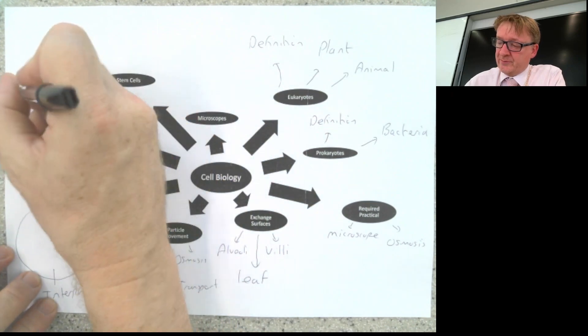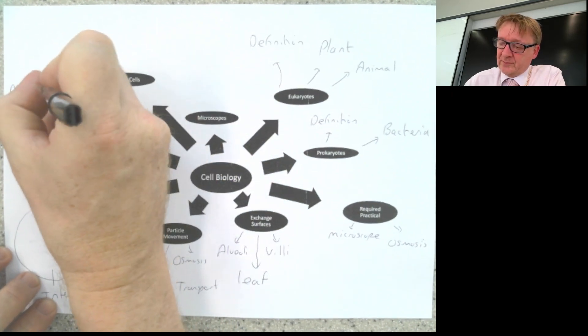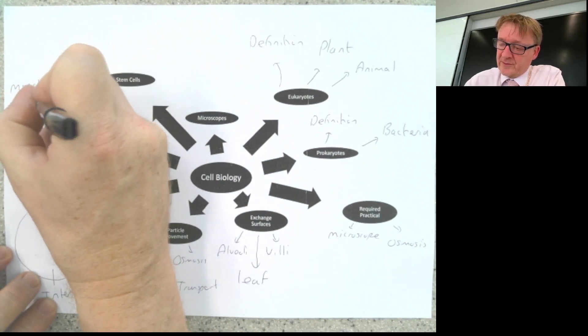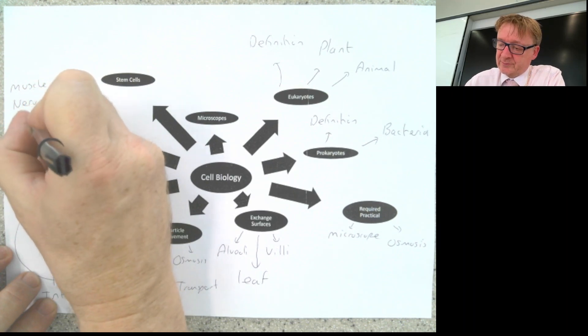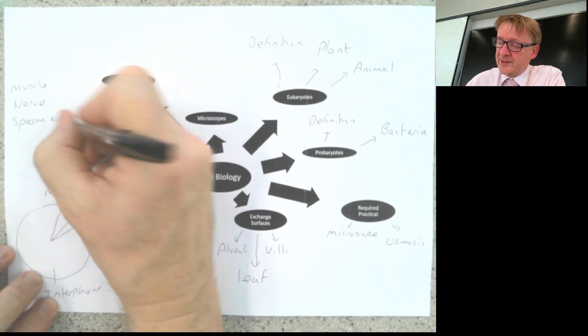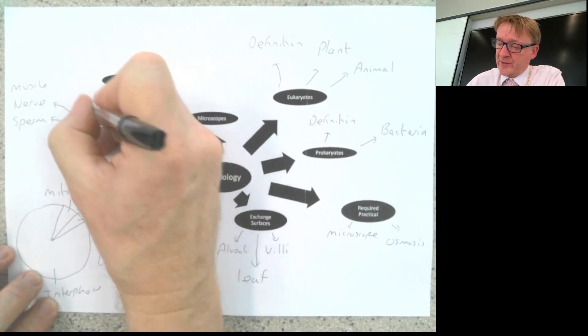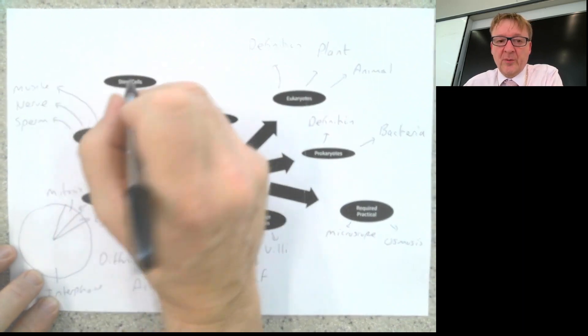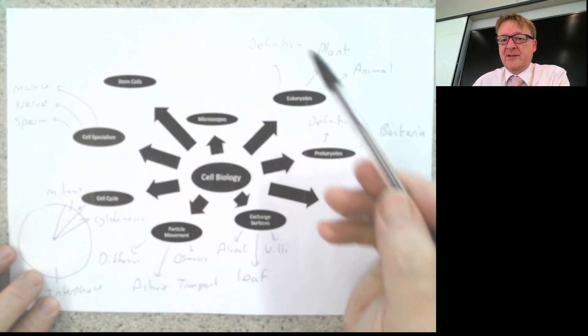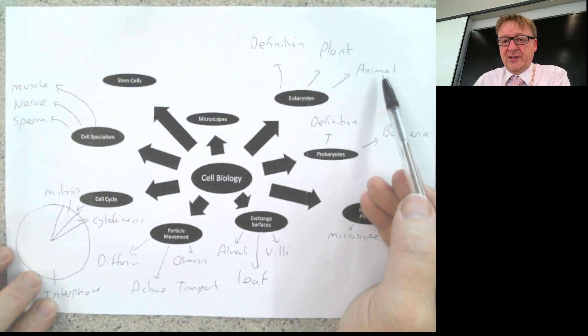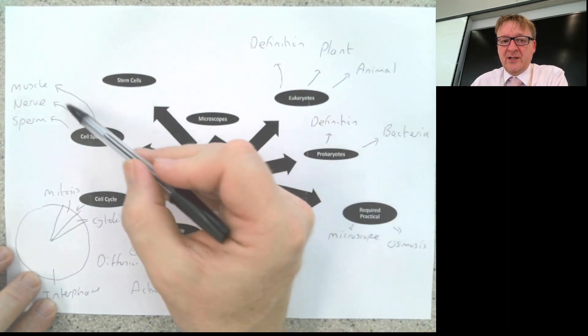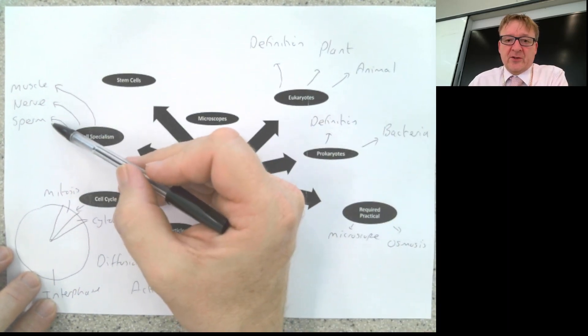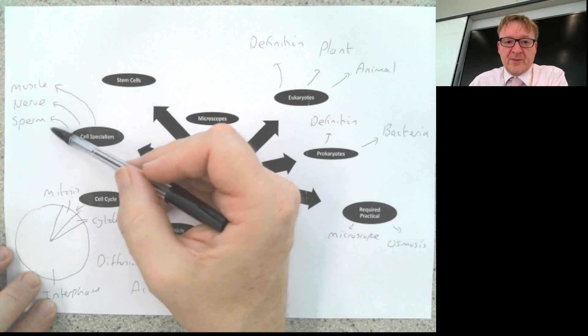Cell specialization. We've got muscle, nerve, and sperm. You need to know how each one is specialized to do their job—how they're adapted from this animal cell over here. There are many others that could be chosen, but these are the three main animal ones.